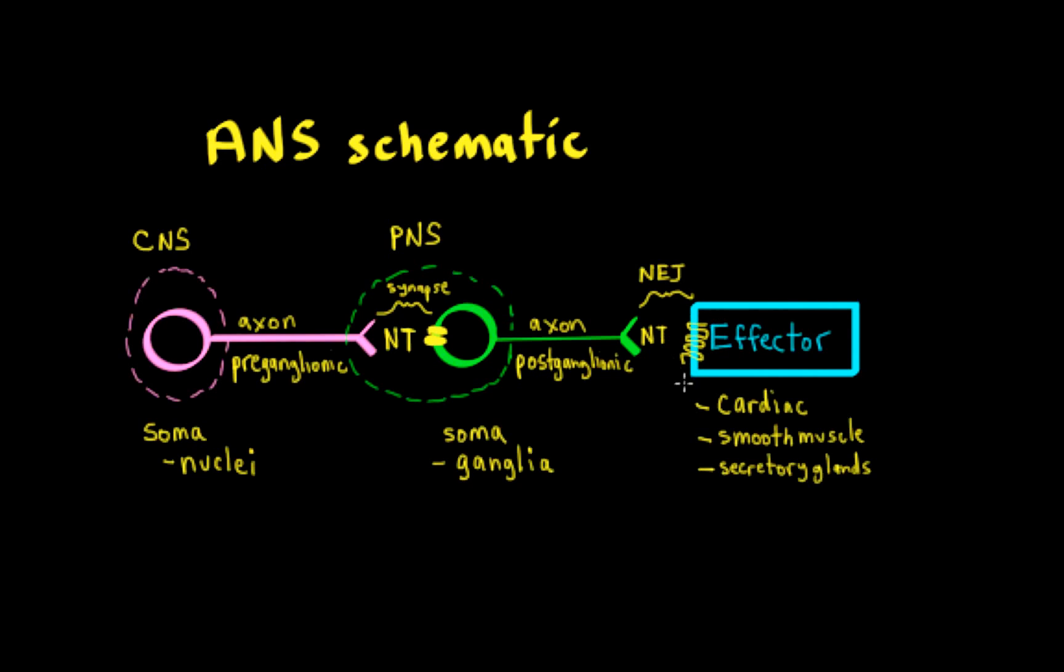And remember, seven-transmembrane-spanning receptors are the G-protein-coupled receptor family. And this junction between the postganglionic nerve terminal and the effector organ is called a neuroeffector junction.